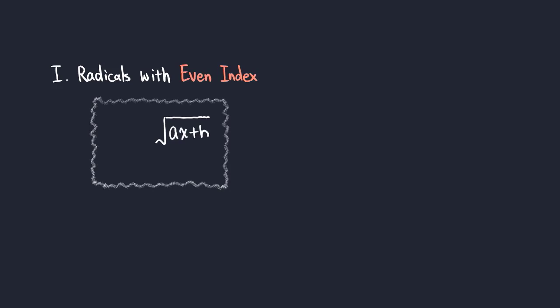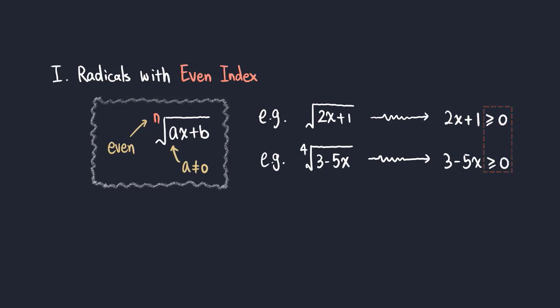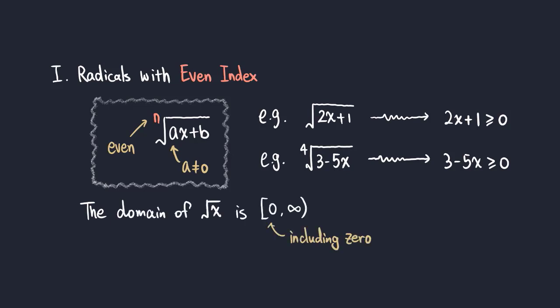For radicals with an even index, such as square roots and fourth roots, the function value is real when the expression inside the radical is non-negative. So in order to find the domain, we set up an inequality with the expression greater than or equal to zero and solve the inequality. For the basic function square root of x, the domain is zero to positive infinity, including zero.